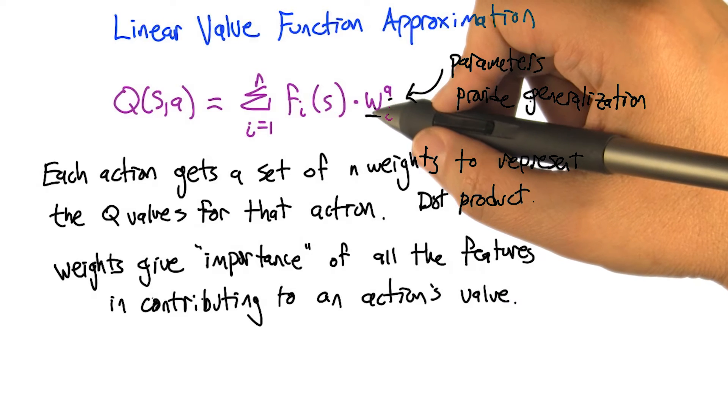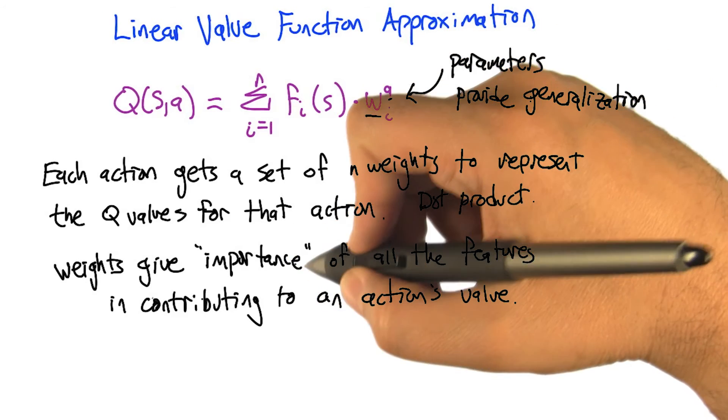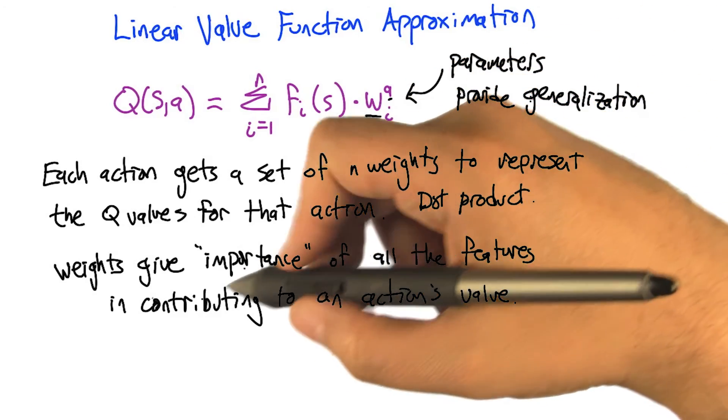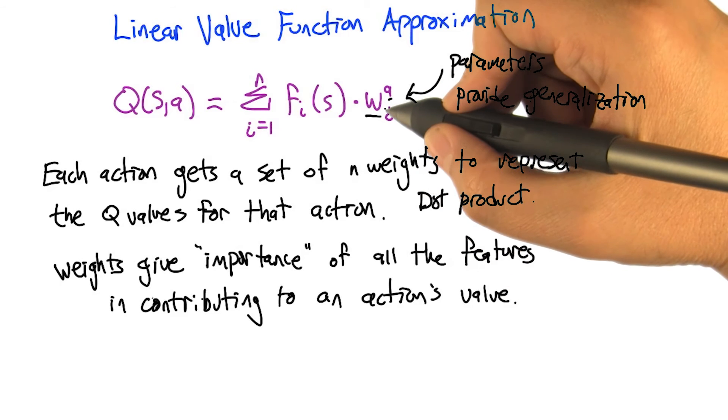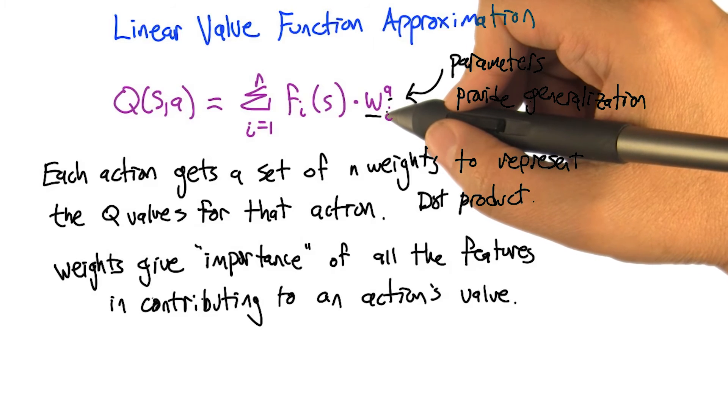Let's think a little bit about what these weights are actually representing. One way you can think about the weight for a feature is that it gives a kind of sense of importance for each of the features in how much they're contributing to the action's value. Sure, so if the weight w^a_i is zero, then it doesn't matter what the feature is. It doesn't contribute at all. That's right, and so then it completely ignores the feature for that prediction.